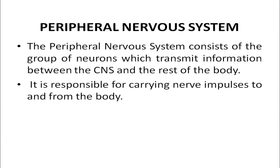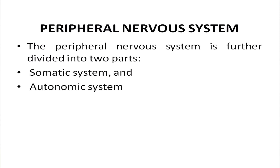The other part of the nervous system is known as the peripheral nervous system, also known as PNS. The peripheral nervous system consists of the group of neurons which transmit information between the central nervous system and the rest of the body. It is responsible for carrying nerve impulses to and from the body — that means it carries nerve impulses from outside to the body and back. The PNS is further divided into two parts: the somatic system and the autonomic system.